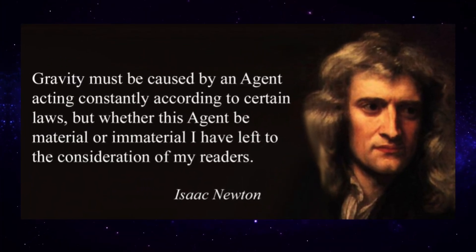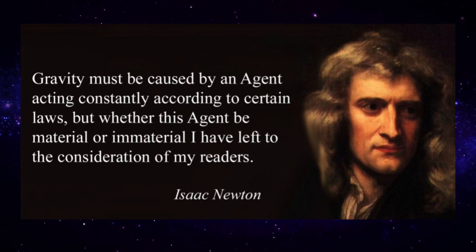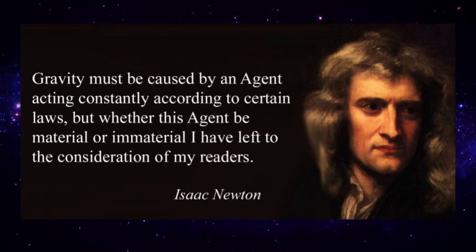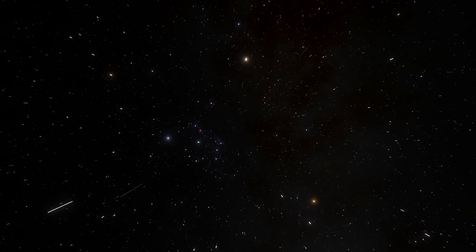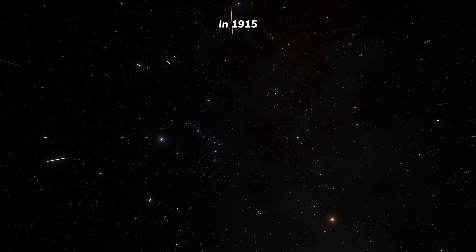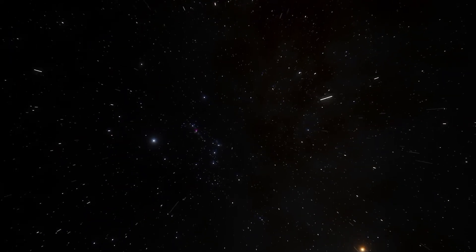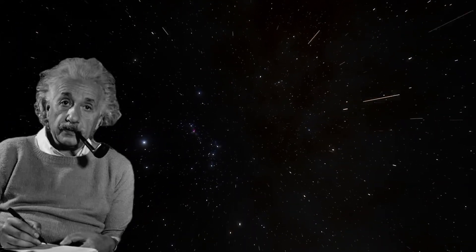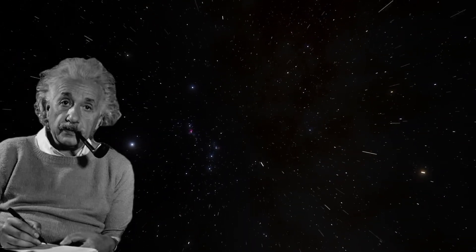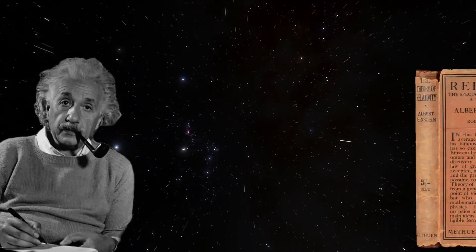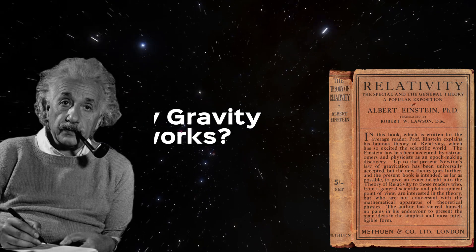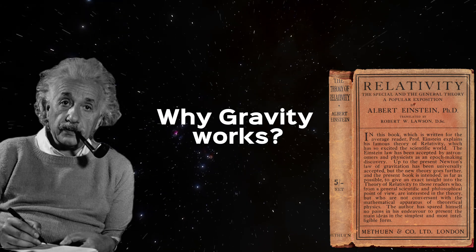Newton simply said that gravity may be caused by an agent, reflecting his belief in God. But later, in 1915, Albert Einstein gave a clear explanation with his general theory of relativity for why gravity works the way it does.